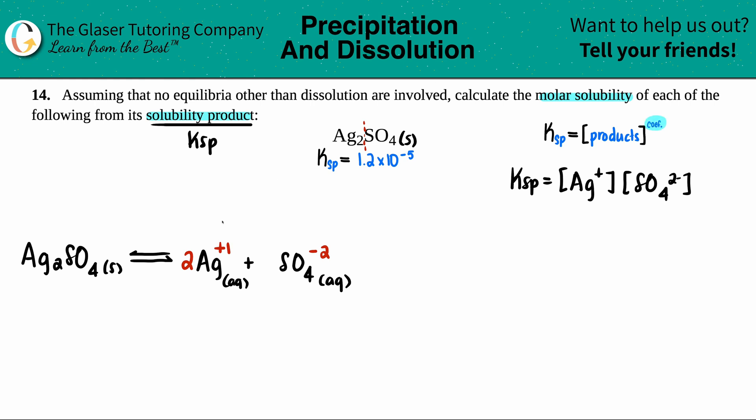But now just be careful, we have to raise it to the coefficients. So I go back to the balanced equation and I say, okay, there was two Ags. So I know that I have to raise the Ag value to the second power. But since there was only one SO4, I don't have to raise that. Anything raised to the first is itself.